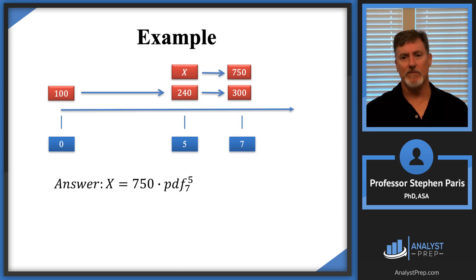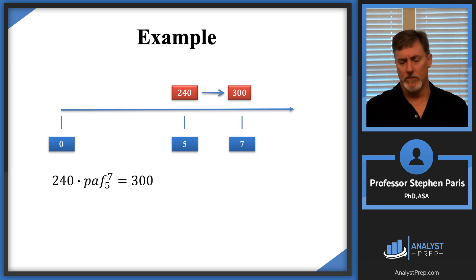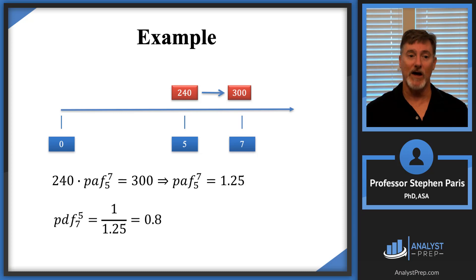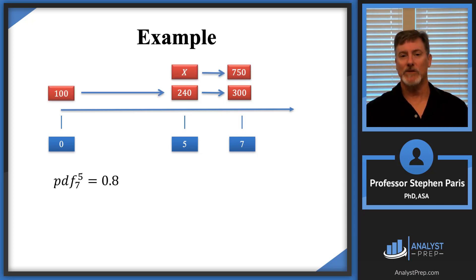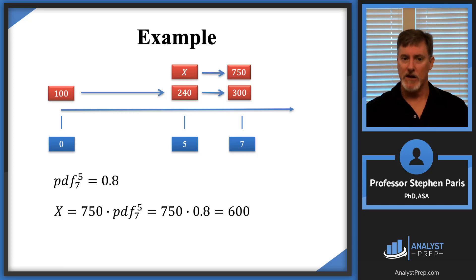As before, focusing on the timeline where 240 accumulates to 300 from time 5 to time 7, we get the periodic accumulation factor from time 5 to time 7 is 1.25. The periodic discount factor from time 7 back to time 5 is the reciprocal of that, so it equals 0.8. Therefore, cap X equals 750 times 0.8, giving a cap X value of 600.